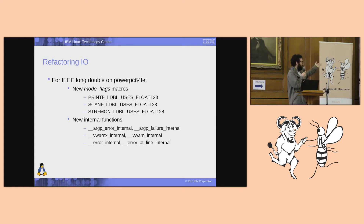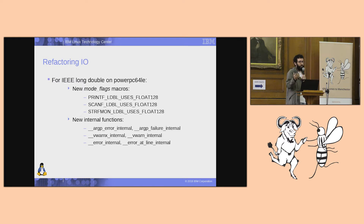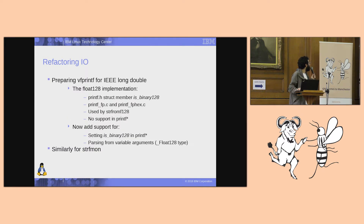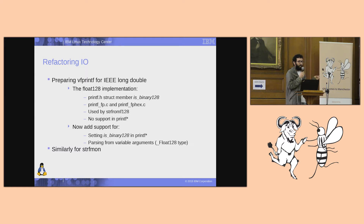I just have to add new flags, new macros that can be used with these flags, which help me print and scan long double values the correct way. Going back: during the Float128 implementation, because the Float128 API does not have new specifiers to add to the format string, the only way to print a Float128 number is to use the strfrom_f128 function. In Glibc, the strfrom function always calls some functions from the printf subsystem.